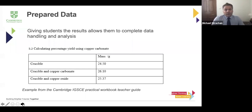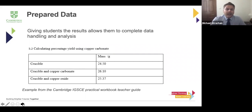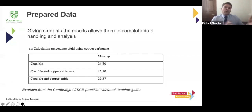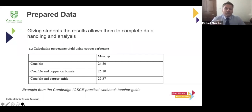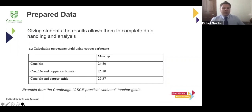The next approach, one we began right at the start of lockdown, was using prepared data — actually giving students the data and having them do data handling, analysis, and conclusions. I've used an example from the Cambridge IGCSE Practical Workbook teacher guide, where all of the practicals have the data supplied. This means students have to do the calculations because they've got the raw data. This was a very good way of engaging students right from the beginning of lockdown — even if students can't go into school, they can still do all the calculation and analysis from home.